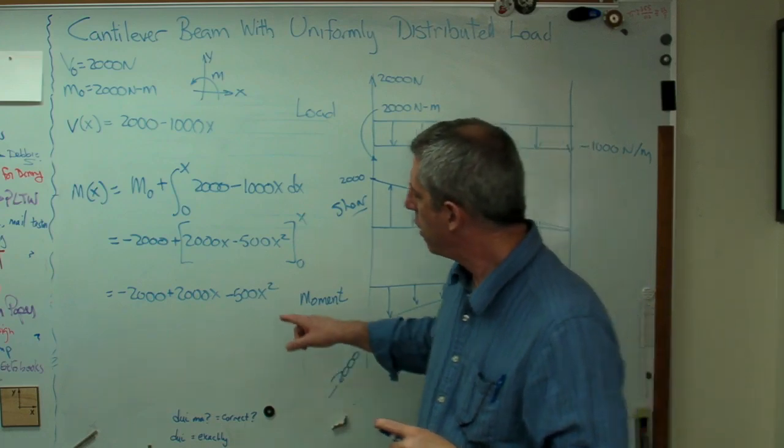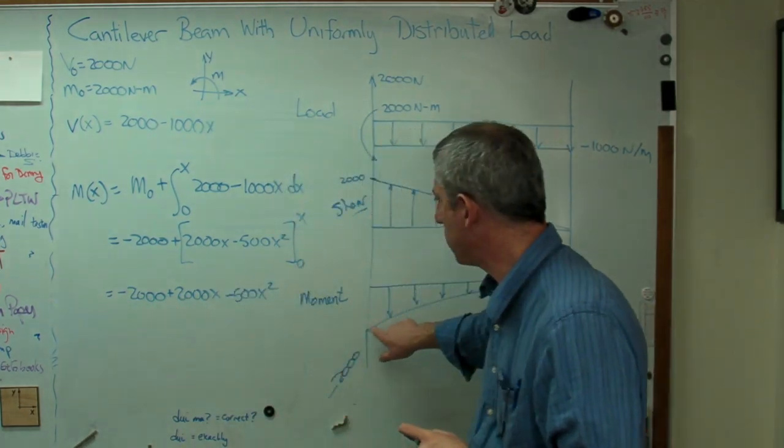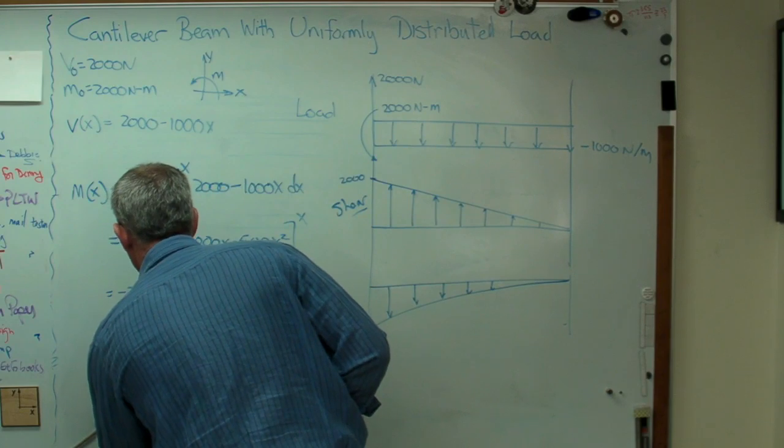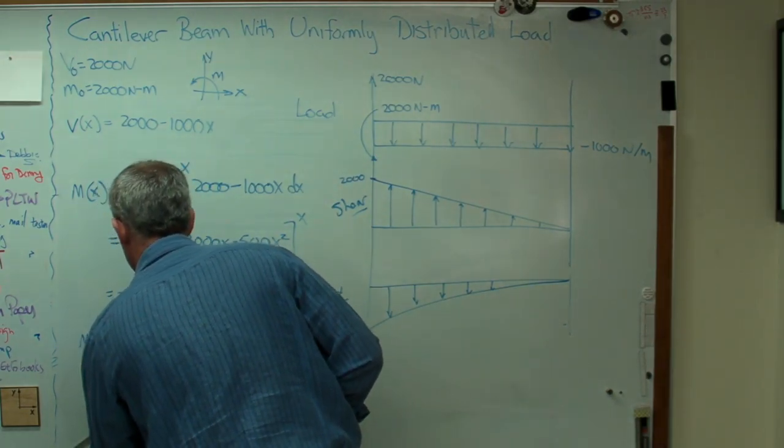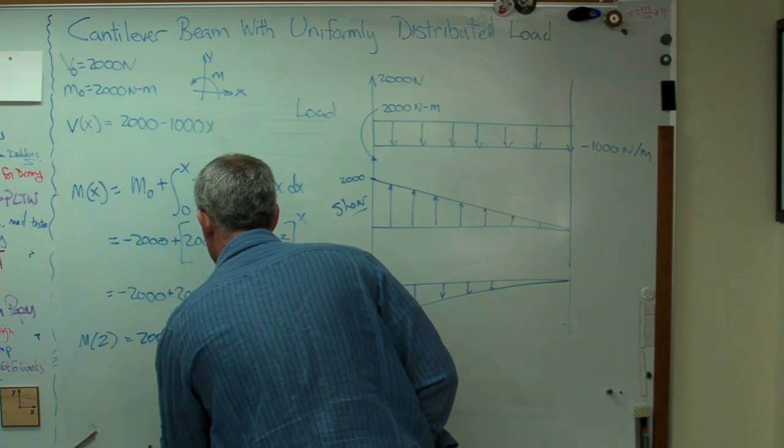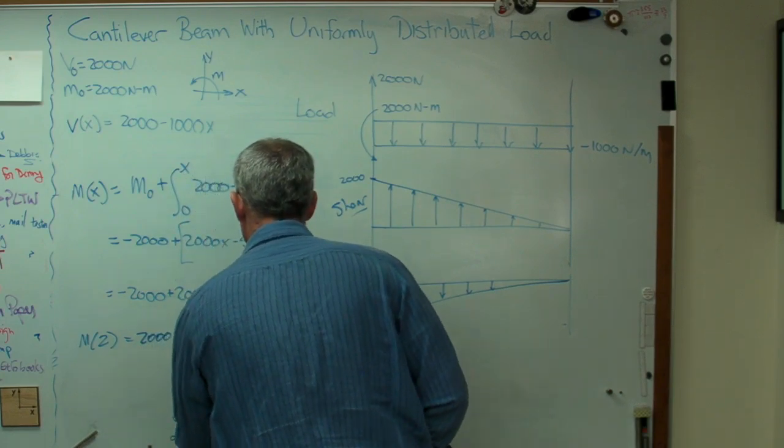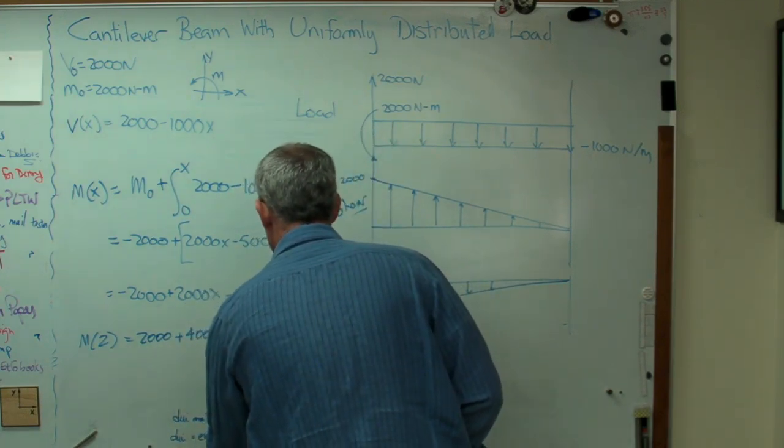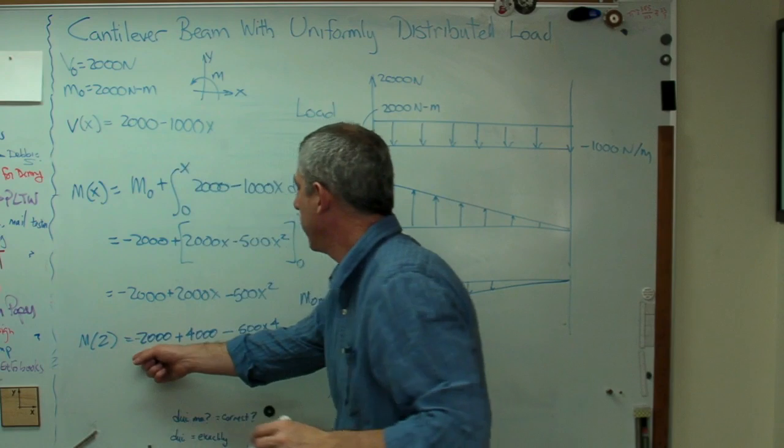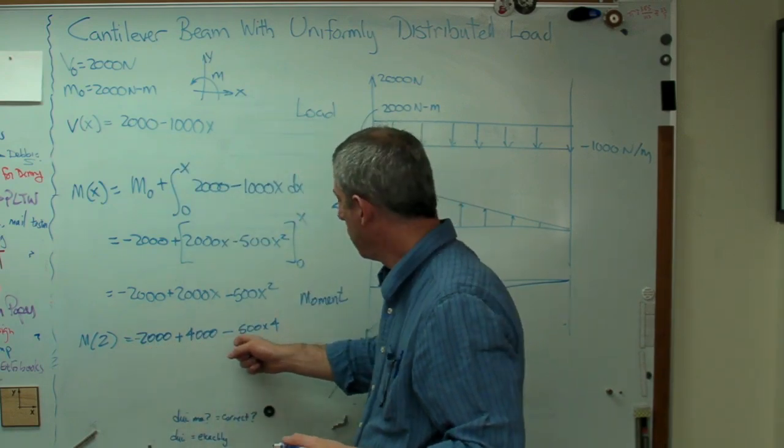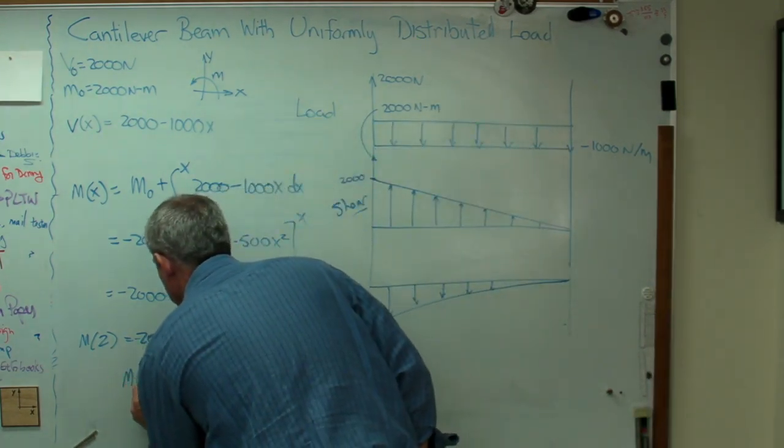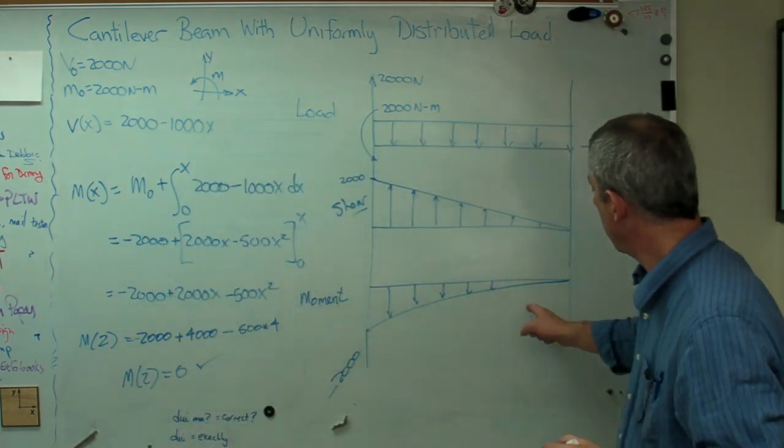Well, okay. Let's think about this a second. What if x is 0? I get minus 2,000. That's good. What if x is 2? Okay. Well, let's see. If x is 2, I get, let's do this. That'd better be 0, right? Okay. So, minus 2,000 plus 4,000 minus 500 times 4. Okay. Minus 2,000 plus 4,000. That's 2,000. Minus 500 times 4, which is also 2,000. So, M of 2 equals 0. And that works. So, this is how we're going to do this.